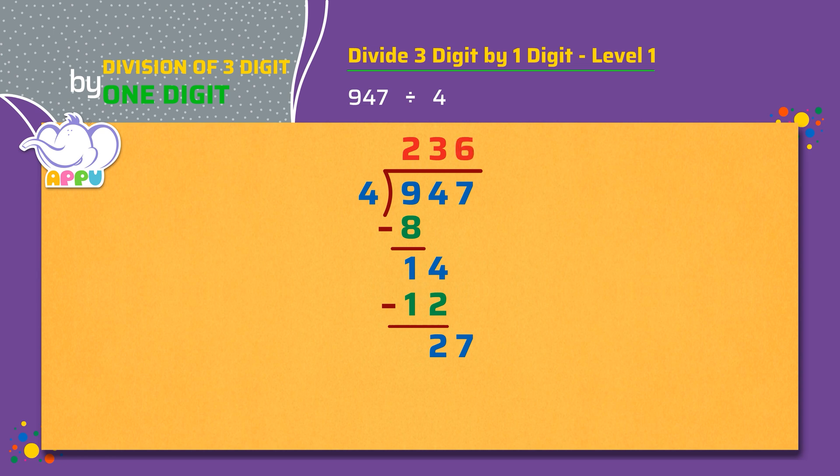We multiply 4 and 6, we get 24. We subtract 24 from 27, we get 3.